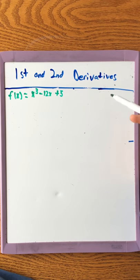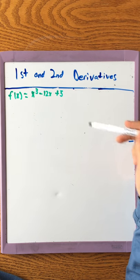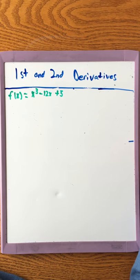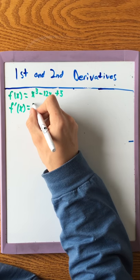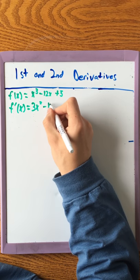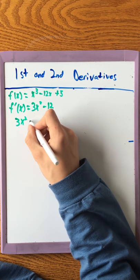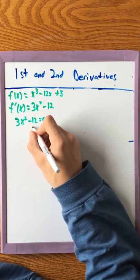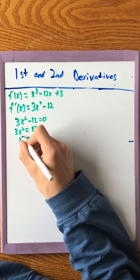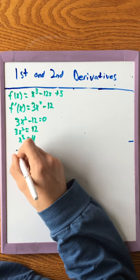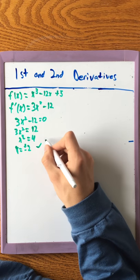Now we're going to use the first and second derivatives to find local maximums, local minimums, and where the function is increasing, decreasing, and its concavity. First, we take the derivative, which equals 3x²-12, and set that equal to 0. Adding 12 gives 3x²=12, so x²=4, which gives x = ±2. Those are your critical points.